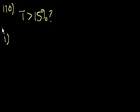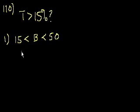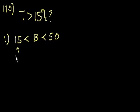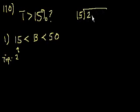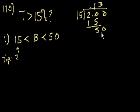Statement 1 says the amount of the bill was between $15 and $50. Let's test the lower end. On a $15 bill, he'll pay a $2 tip. What percentage is that? 15 goes into 2.00 — 15 goes into 50 three times, giving 45, and it just keeps going. So that's approximately a 13% tip.